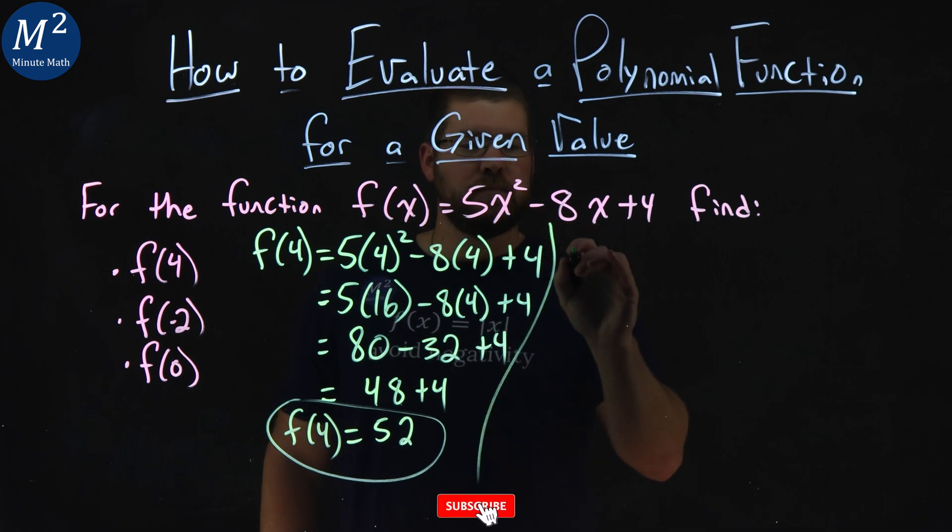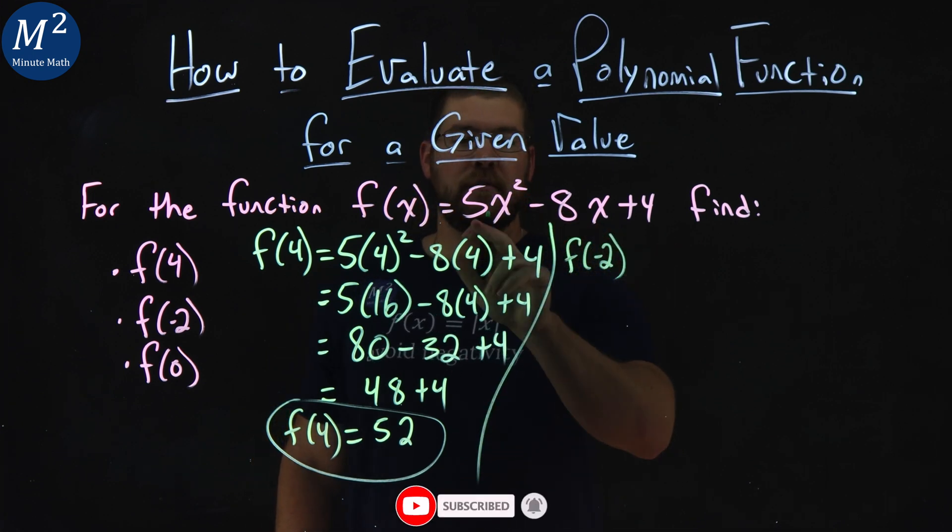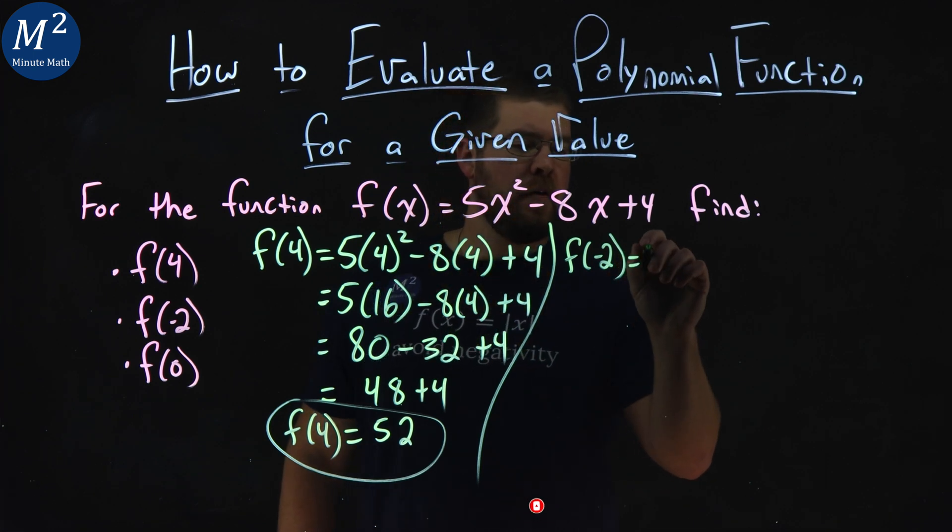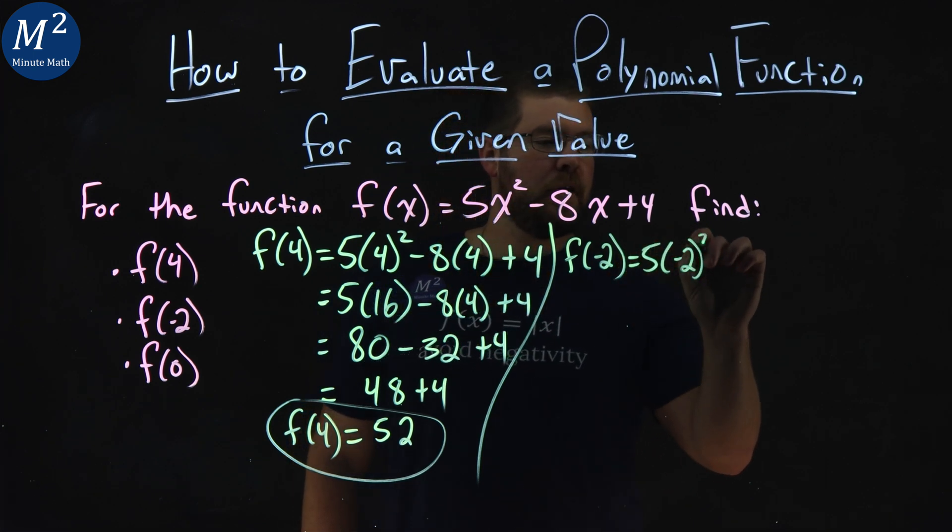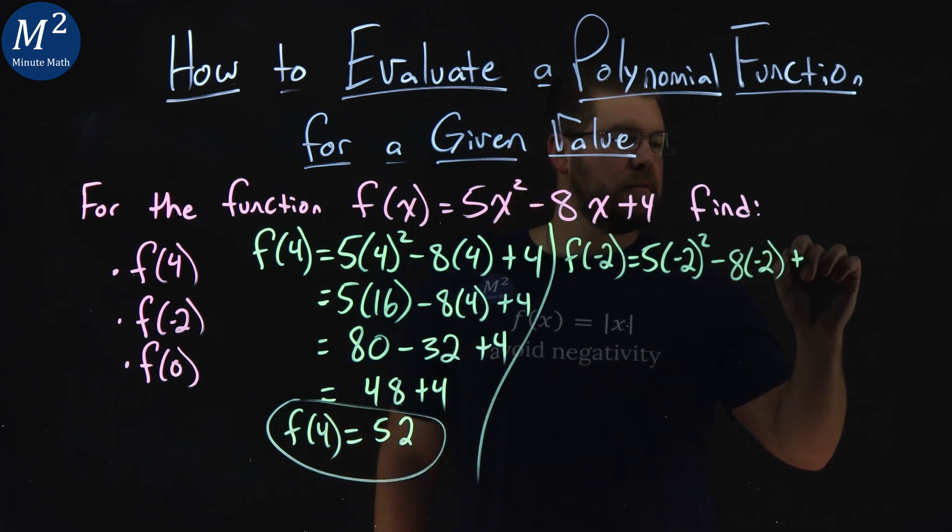Now let's do it again for negative 2. Let's put it in here. f(-2), we're substituting -2 in for x. 5 times -2, all squared, minus 8 times -2 plus 4.